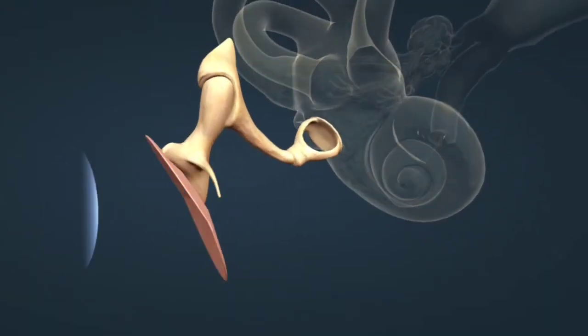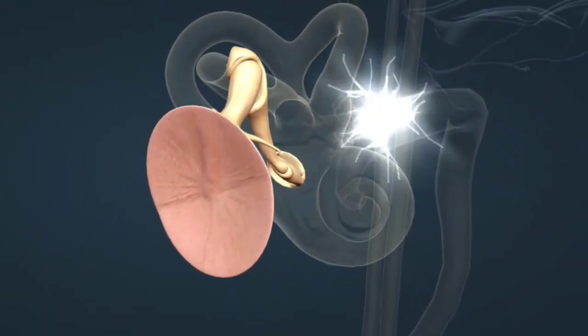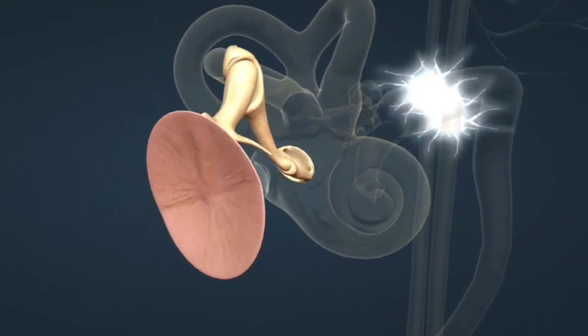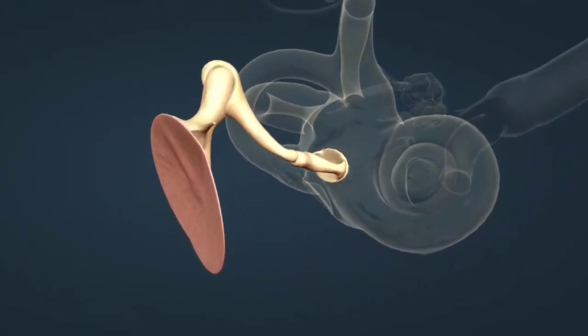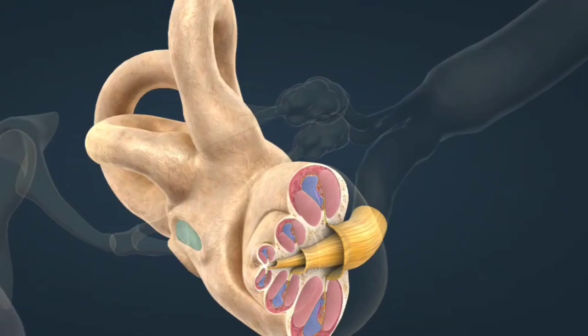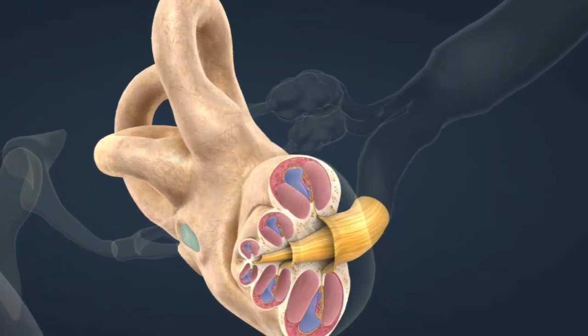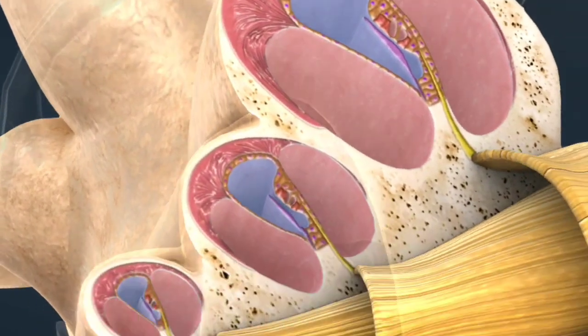Two, middle ear: amplifying sound. Ossicles (small bones): Malleus (hammer) attached to the eardrum and vibrates in response. Incus (anvil) transmits vibrations from the malleus to the stapes.